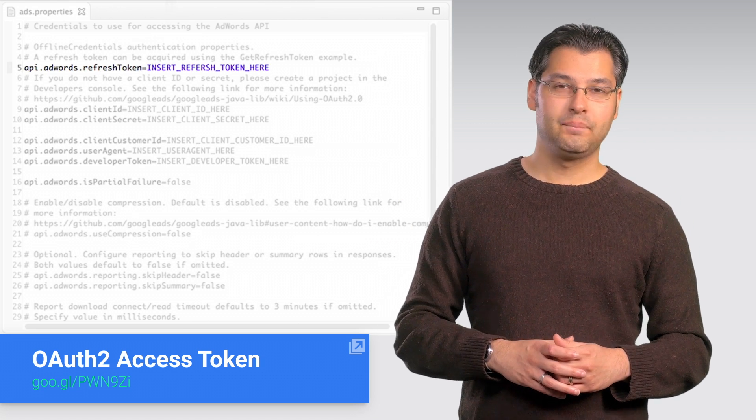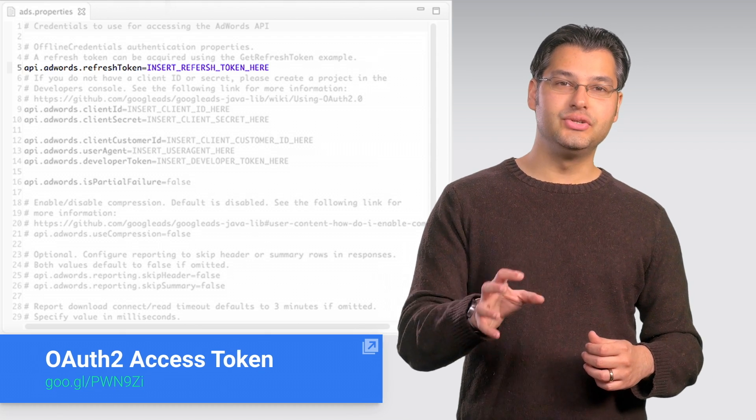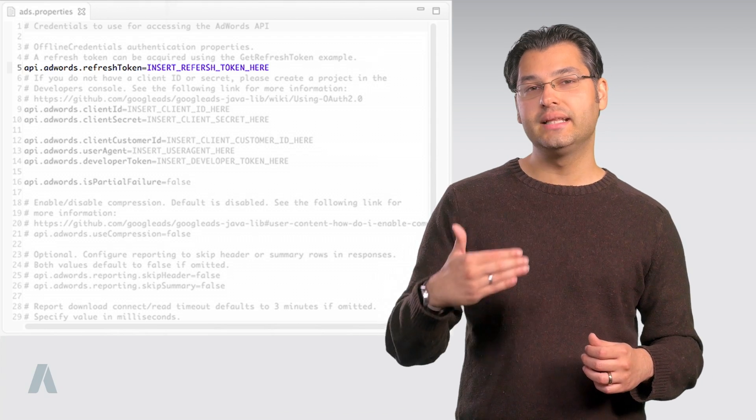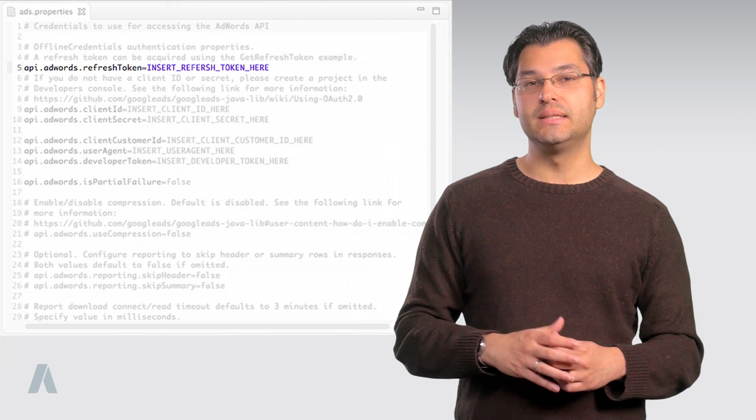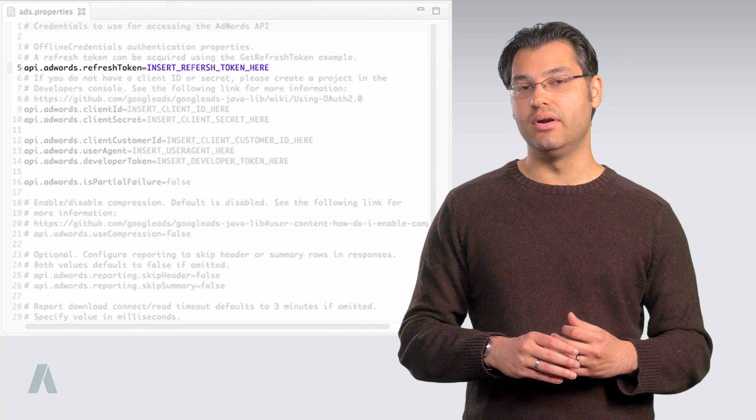Refresh token. The client library uses a refresh token to automatically regenerate the OAuth 2 access token. We created this by means of a utility in the client library in episode 2.